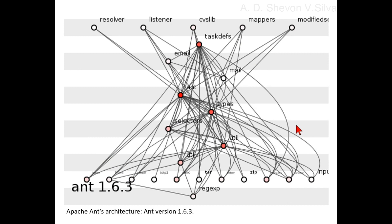The main three packages — Ant, task devs, and types — lie embedded in dependencies, offering no clear relations with other surrounds.